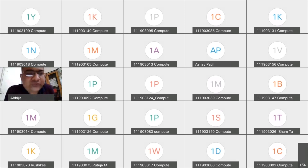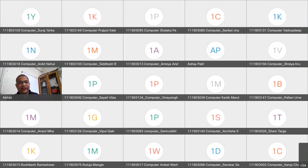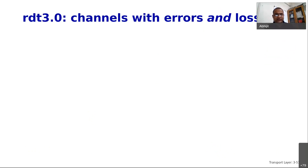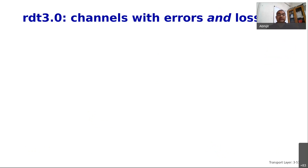A quick review of what we have done: we started a discussion on the transport layer, began with multiplexing and demultiplexing, then looked at principles of reliable transport, developing RDT incrementally. When we stopped in the last class we were discussing the scenario where the channel has both errors and loss, and we saw the protocol for that — RDT 3.0.